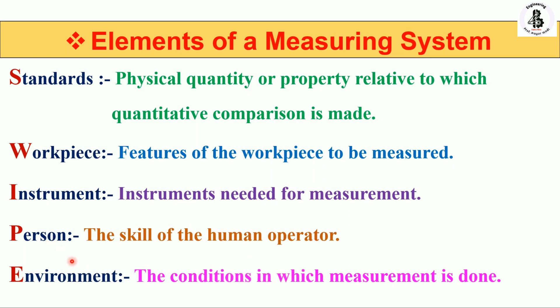The last element is E, which stands for Environment. In measurement science, the environment plays a vital role. You should take care of environmental conditions like humidity and temperature, as well as the storage of standards. Take care of precise instruments like vernier calipers, micrometers, and standard gauges like sine bars for angular measurement. For slip gauges used as length standards, you should take care of the environment conditions for their proper use.